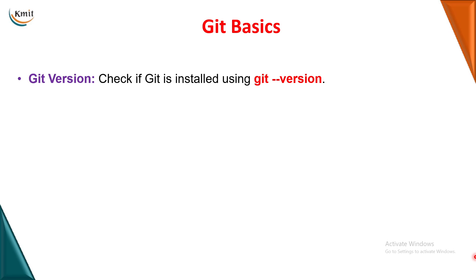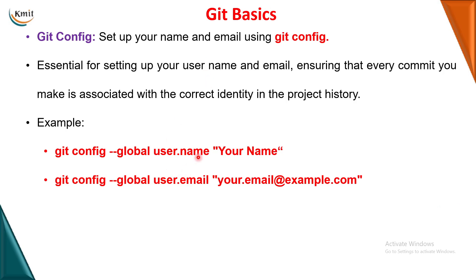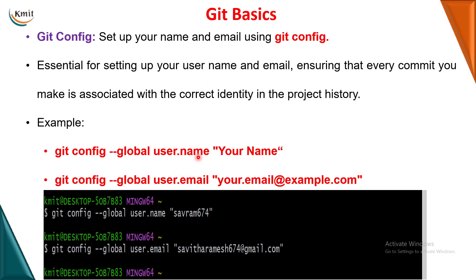Today let us talk about the different basic commands needed to use git. The first command is git version. If you want to know if git is installed in your system, you will use this command called git version — it will give you whatever the latest version you have installed.